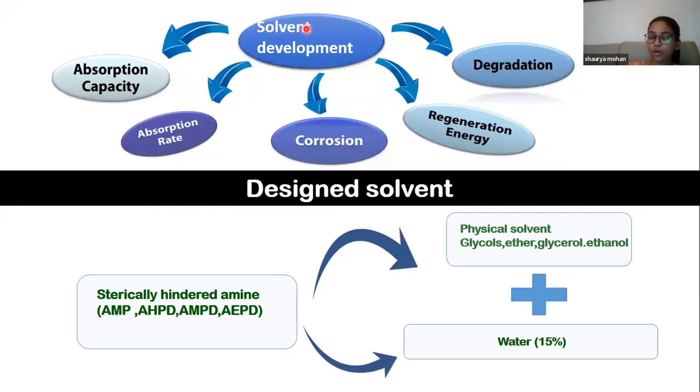So, when you design a solvent, you have to look for the following properties: it should have high absorption capacity, high absorption rate, low corrosion property, low regeneration energy, low degradation. So we have studied all the aspects of this thing, and we finally come to this conclusion that the design solvent we have used is sterically hindered amine, which is AMP, HPD, AMPD, which is easily available in the market and not at a very high rate, and used with a physical solvent, which is glycol, ether or glycerol, and just added 15% of water. We have reduced the water consumption here, because water has high specific heat, it requires high temperature to regenerate, it has high boiling point. That is why we have reduced the water percentage to 15%, which reduces a large amount of evaporation energy, heat of vaporization.